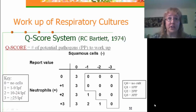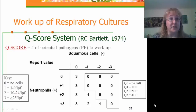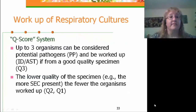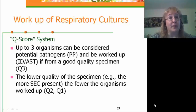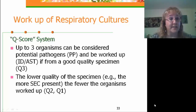Note that any specimen containing no neutrophils but also no squamous cells is given the highest score, because of those patients who may not be able to mount a neutrophil response. With the quality score system, up to 3 organisms considered potential pathogens will be worked up — meaning complete identification and susceptibility testing when appropriate. The lower the quality of the specimen, the fewer potential pathogens that will get worked up.